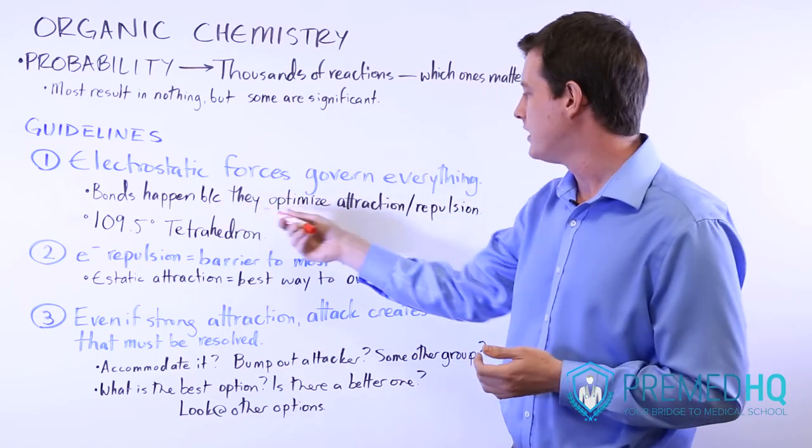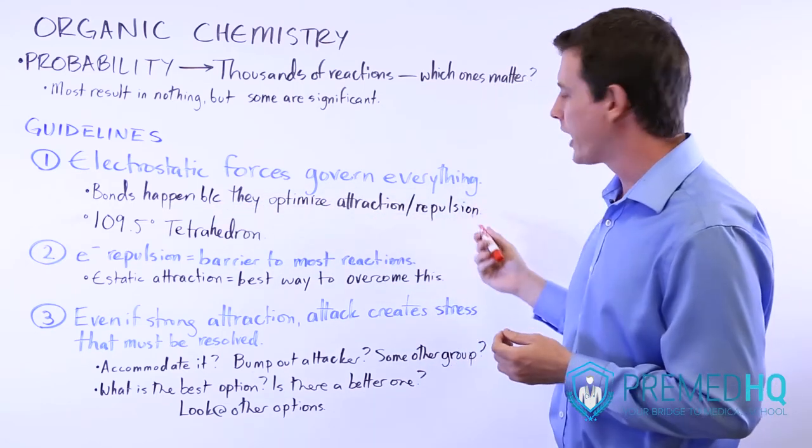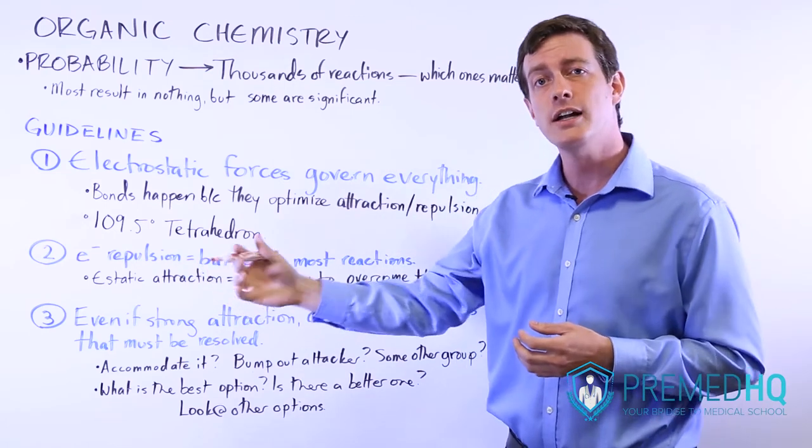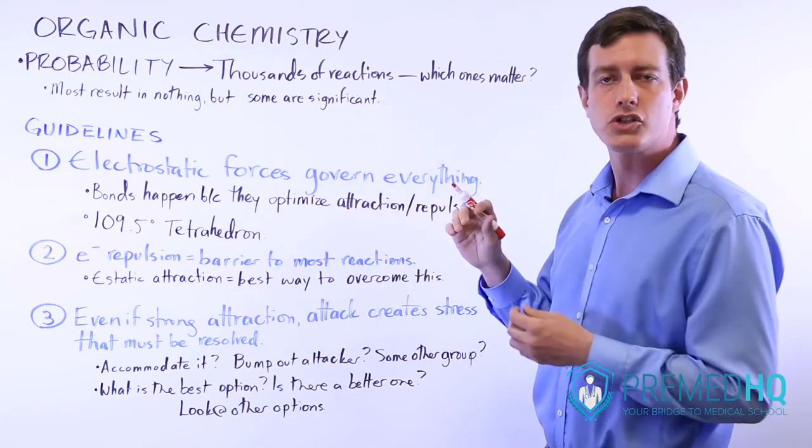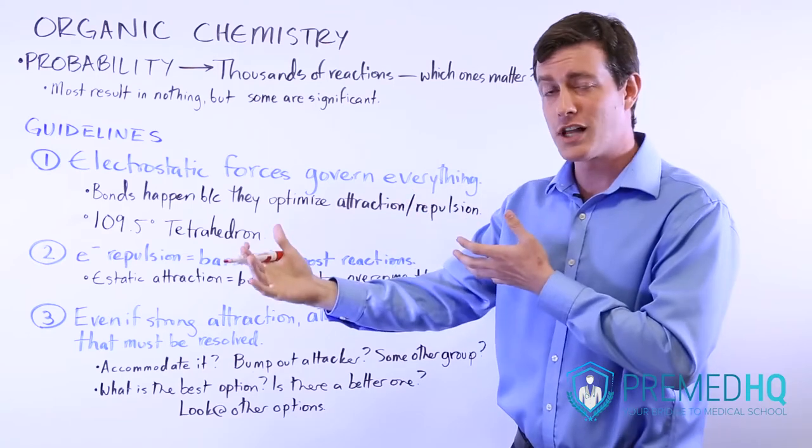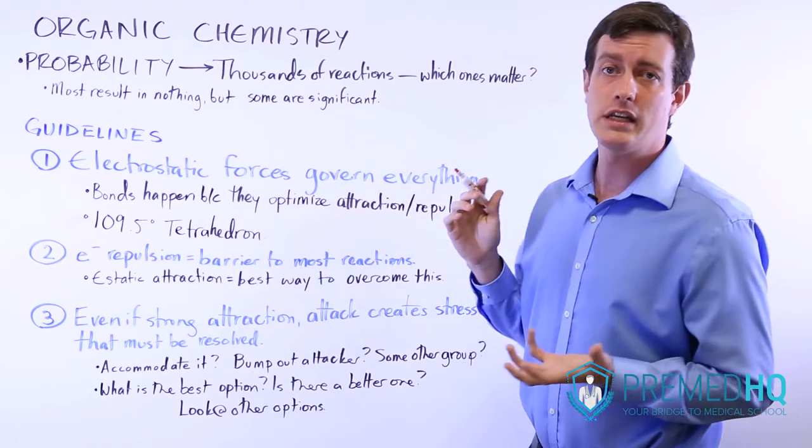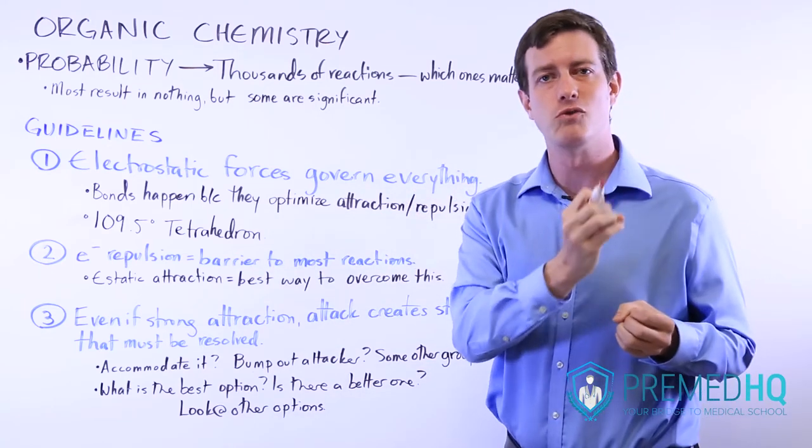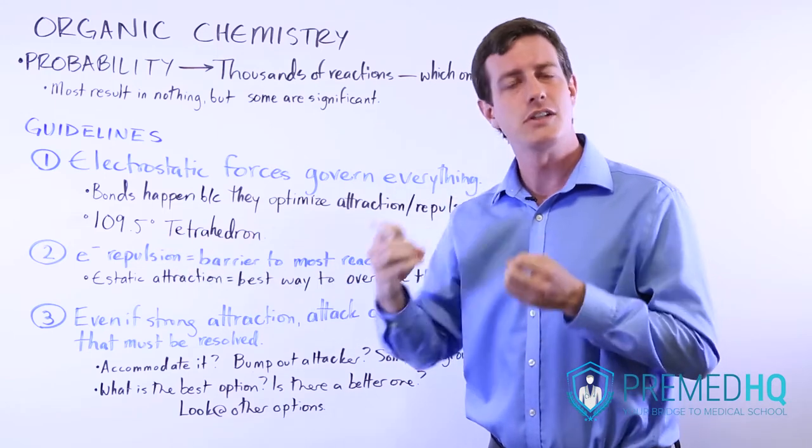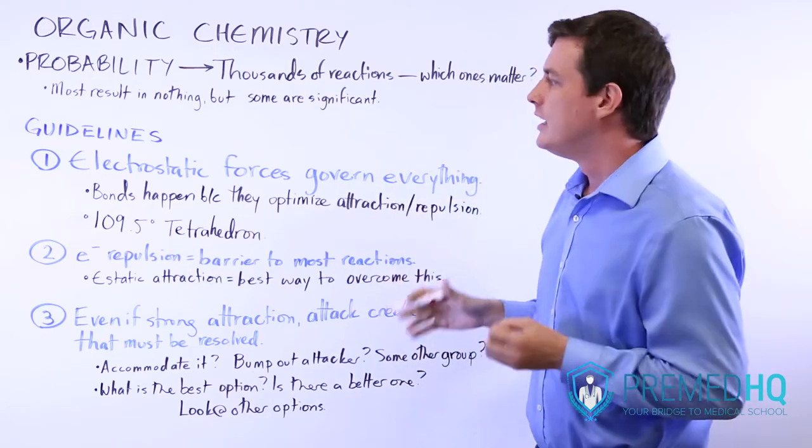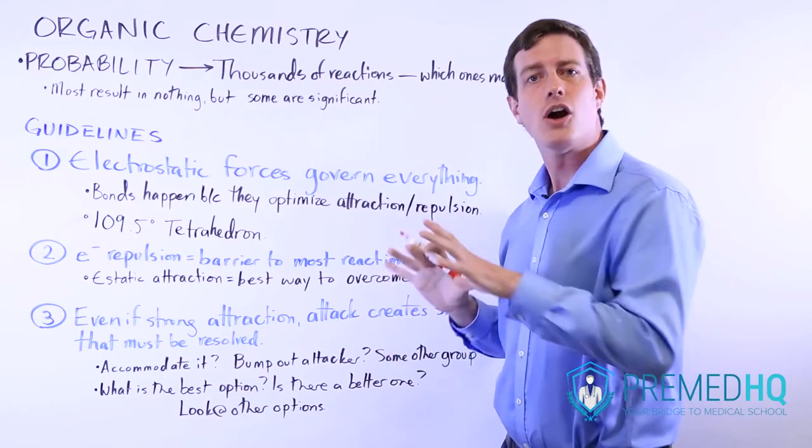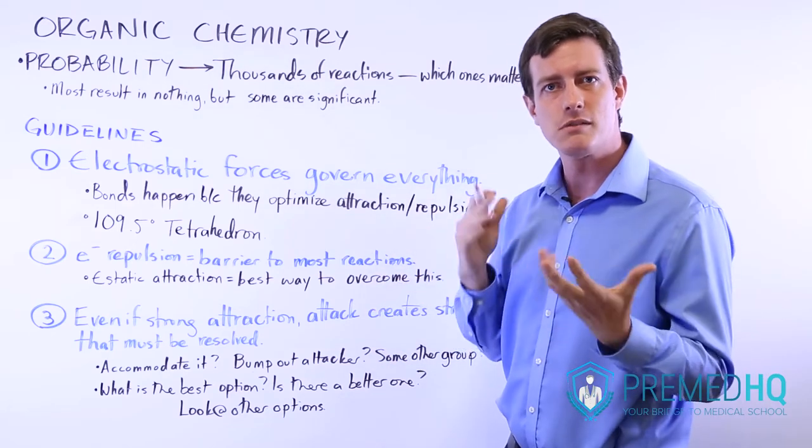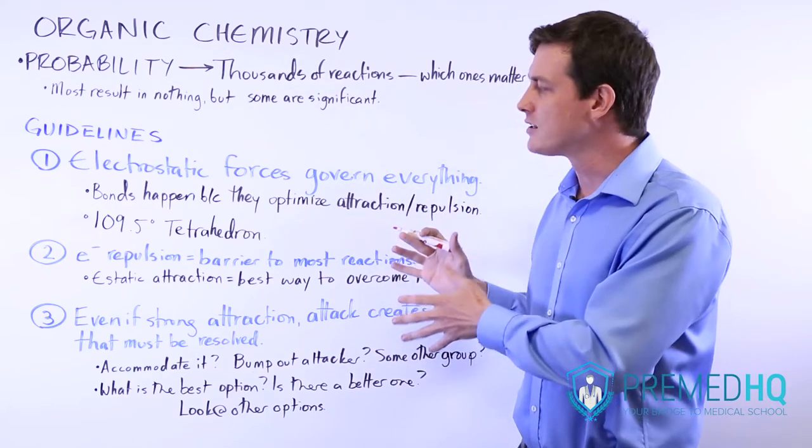This is at the heart of why bonds occur. Bonds happen because they optimize the attraction between electrons and nuclei, and minimize the repulsion between electrons and other electrons, and between the positively charged nucleus of one atom and another. This is why nucleophiles are often attracted to carbon, for example.